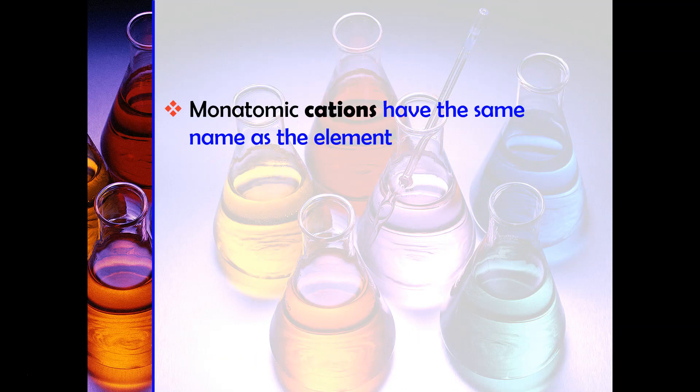Recall up until this point we've only talked about monatomic ions. Monatomic cations have the same name as the element. We didn't change the name on the metal, so for example sodium is called the sodium ion and calcium is the calcium ion.